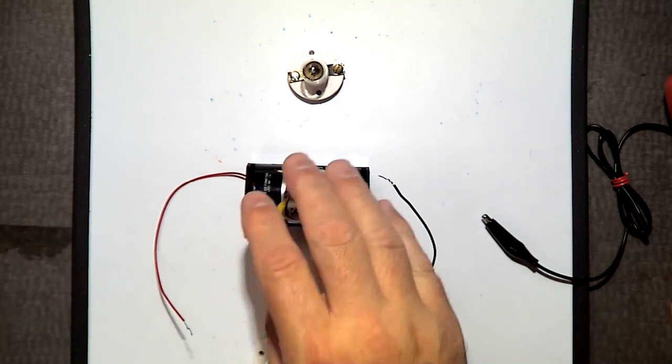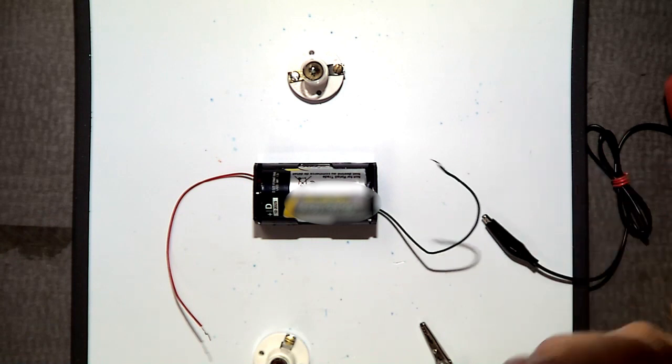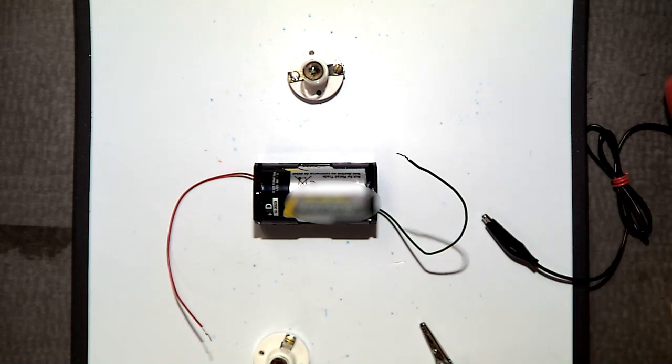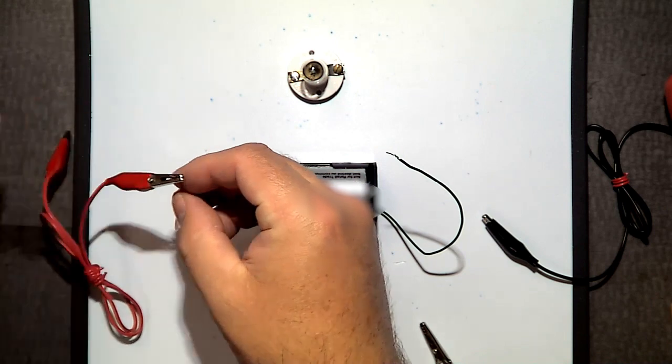And I've got my positive lead facing left, negative facing right on my battery holder. What I'm going to do is I will just use the red leads and once again I'm wiring up diagram C.